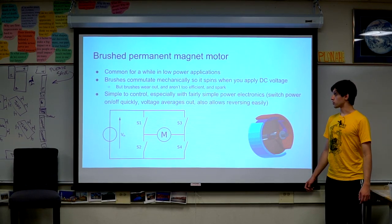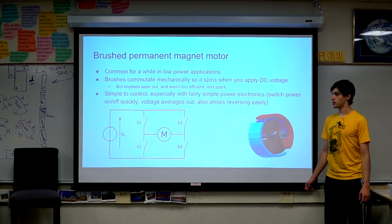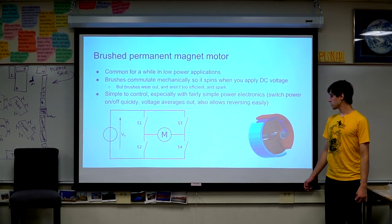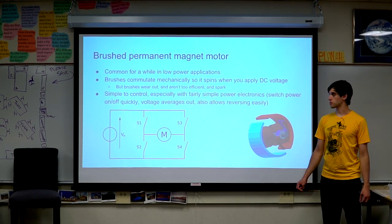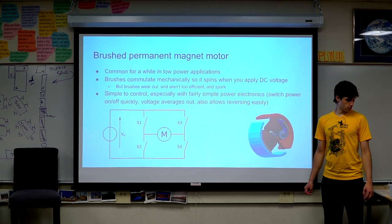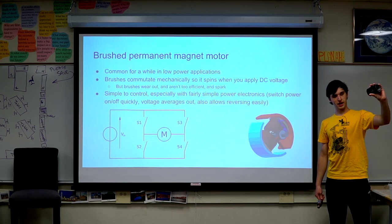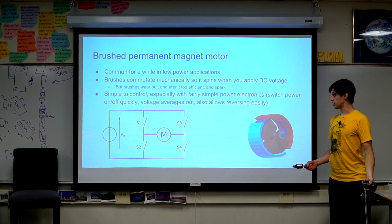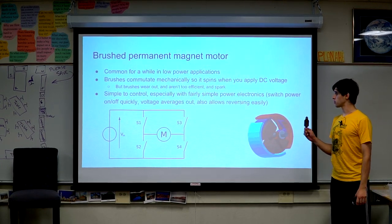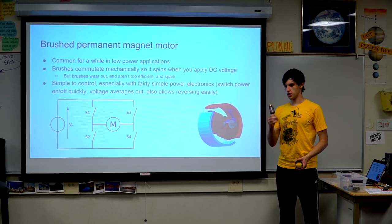Now let's get into an actual brushed permanent magnet motor. These are the basic kind of motors we use in FRC for almost everything. They were by far the most common kind of motor in low-power applications because they're really simple to control. Basically, the stator has two big permanent magnets inside it and stays stationary. The rotor has some coils in it, and when you apply DC voltage it spins. You have things called brushes that change which of the coils are energized.